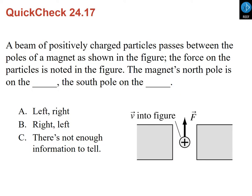Another example: we have a beam of positively charged particles passing through the poles of a magnet. The force on the particle is up, and the velocity of the particle is into the figure. The question is which end is the north and which is the south. You point four fingers into the figure and bend them so that the force is up — you realize you have to bend them this way, which means the field is going from this side to this side, making this end a north and the other a south.